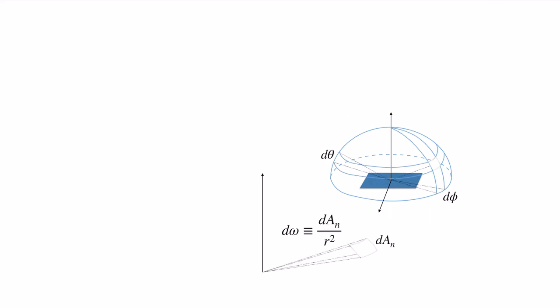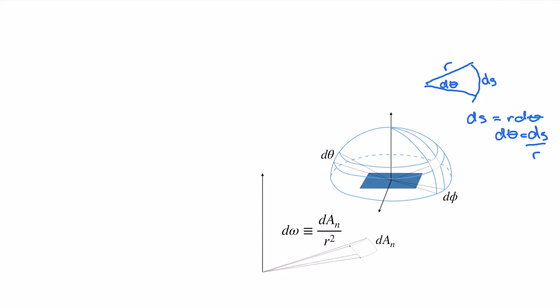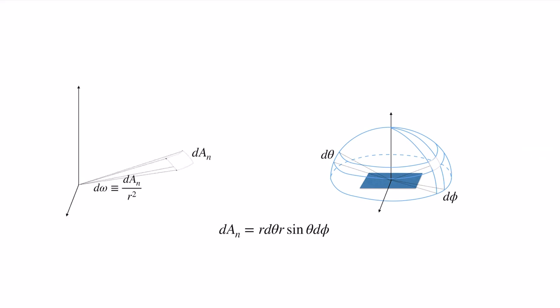We also need to define the concept of a solid angle, which is the two-dimensional analog of our normal angle. Recall that for a differential angle dθ with arc length ds, we have ds = r dθ, so dθ = ds/r. Similarly, the differential solid angle dω is defined such that the differential area dA_n subtended by dω equals that area divided by the radius squared.